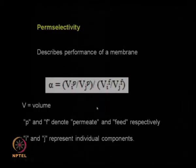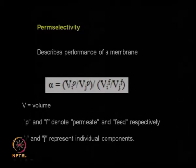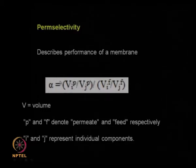Perm selectivity α is a function of the permeate-to-feed ratio of the volumes of species i and j, where p represents the permeate and f represents the feed. Industrial applications of pervaporation are now becoming larger and larger as it has been realized that the process has a lot of advantages, so there are large-scale installations of pervaporation.